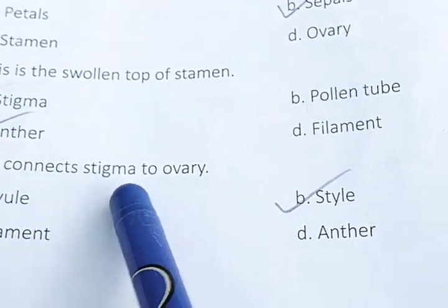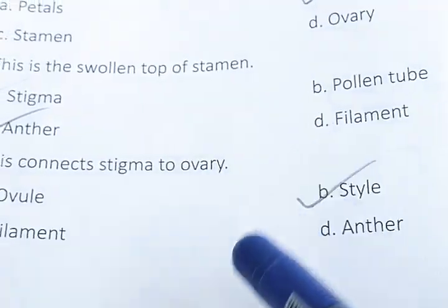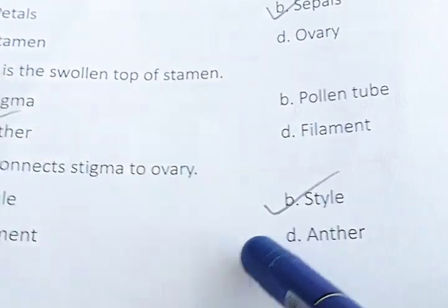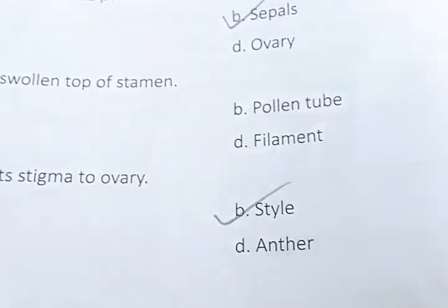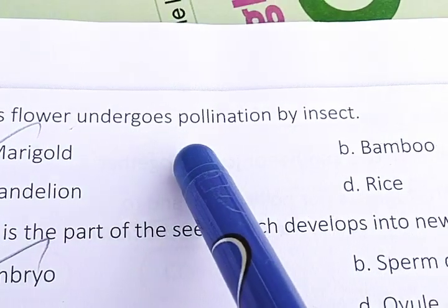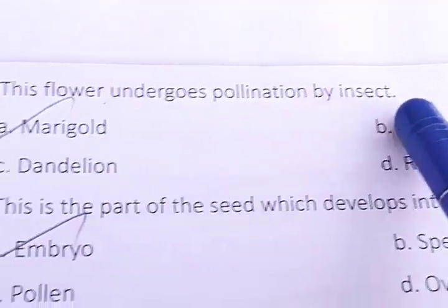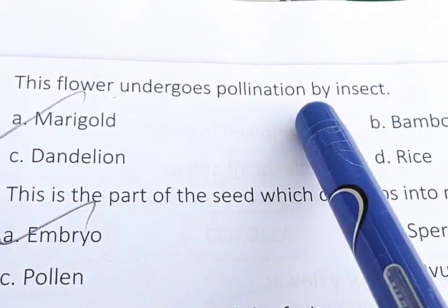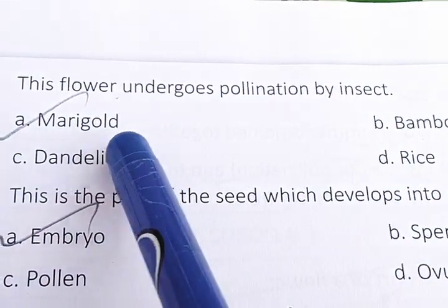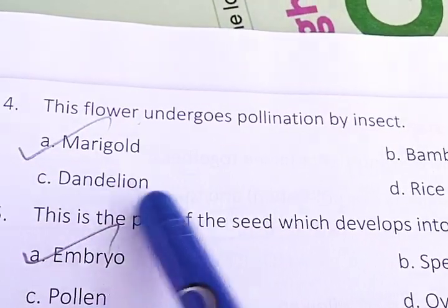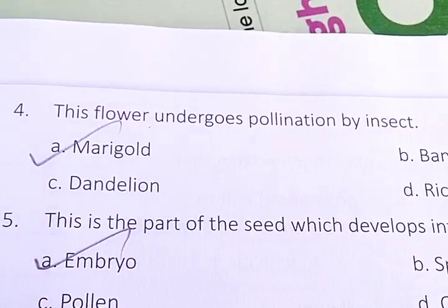This connects the stigma to the ovary — the filamentous body joining the ovary with the stigma — that is known as the style. This flower undergoes pollination by insects. Insect-pollinated flowers are normally bright colored and also scented, so the answer will be marigold.